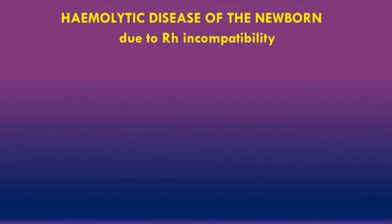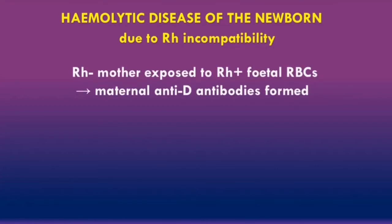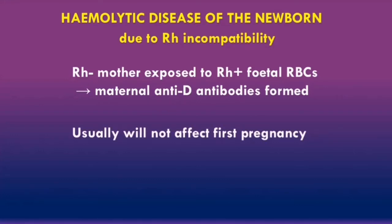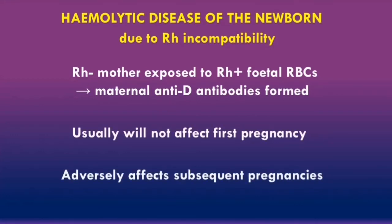To recap: hemolytic disease of the newborn due to rhesus incompatibility occurs when a rhesus negative mother is exposed to rhesus positive fetal red blood cells, leading to maternal anti-D antibodies being formed and targeting the fetal red blood cells. It usually will not affect the first pregnancy when the initial exposure occurs, but it can adversely affect subsequent pregnancies.